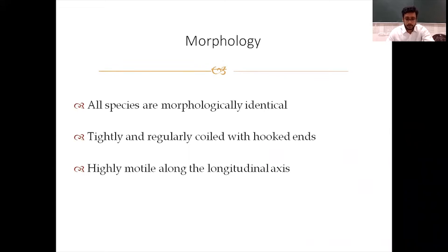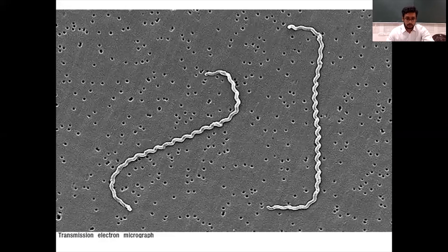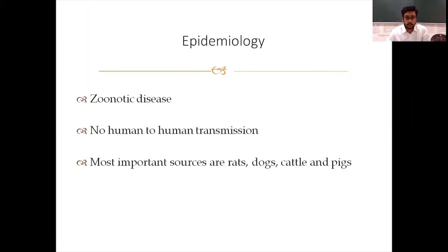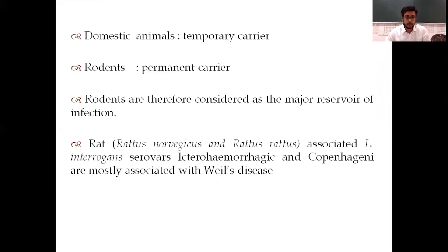Morphology: all species are morphologically identical — tightly and regularly coiled with hooks and highly motile along the longitudinal axis. Under the electron microscope, the organism appears spirally. Epidemiologically, it is a zoonotic disease with no human-to-human transmission. It is transmitted from rats, dogs, cattle, or pigs. Dogs are temporary carriers, while rodents are permanent carriers — therefore rodents are considered the major reservoir for infection. Rats associated with L. icterohaemorrhagiae serovar are mostly associated with Weil's disease.